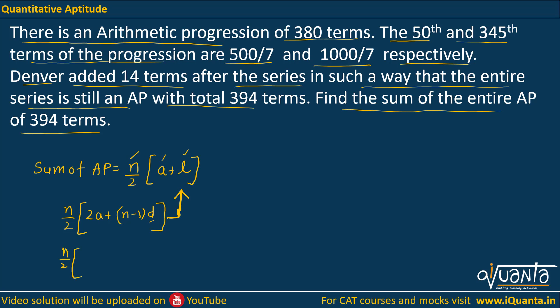How to do that? N upon 2, we can write this 2a as a plus a plus n minus 1 into d. Now, this a plus n minus 1 into d becomes the last term and a is the first term. So this formula comes up, n upon 2, a plus l. Now we will check which formula to use over here.